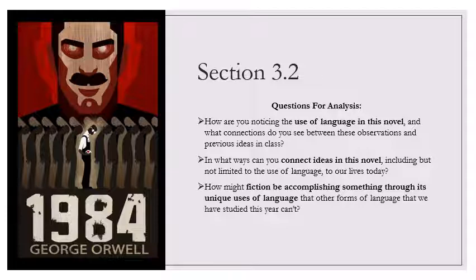O'Brien's manner became less severe. He resettled his spectacles thoughtfully and took a pace or two up and down. When he spoke, his voice was gentle and patient. He had the air of a doctor, a teacher, even a priest, anxious to explain and persuade rather than to punish. I am taking trouble with you, Winston, he said, because you are worth trouble. You know perfectly well what is the matter with you. You have known it for years, though you have fought against the knowledge. You are mentally deranged. You suffer from a defective memory. You are unable to remember real events and you persuade yourself that you remember other events which never happened. Fortunately it is curable. You have never cured yourself of it because you did not choose to. There was a small effort of the will that you were not ready to make. Even now I am well aware you are clinging to your disease under the impression that it was a virtue, or that it is a virtue.